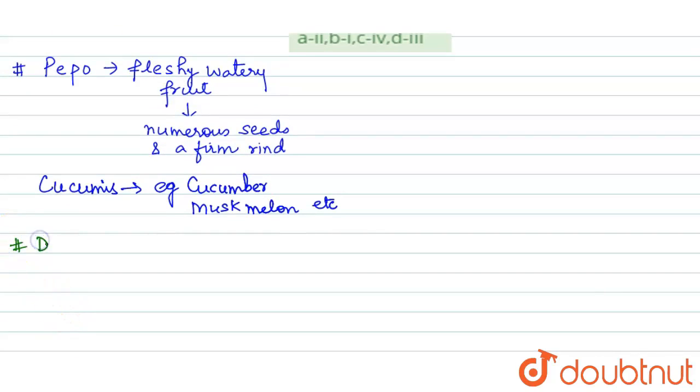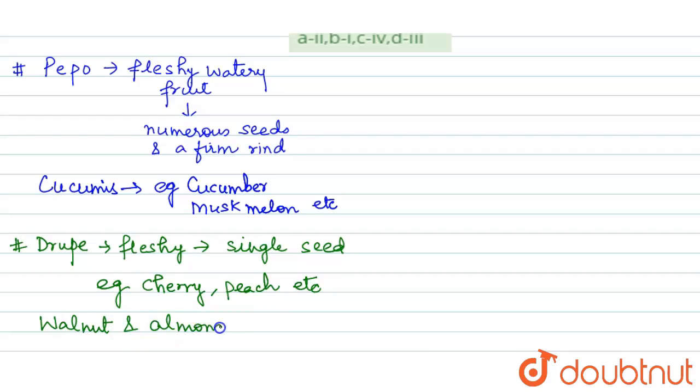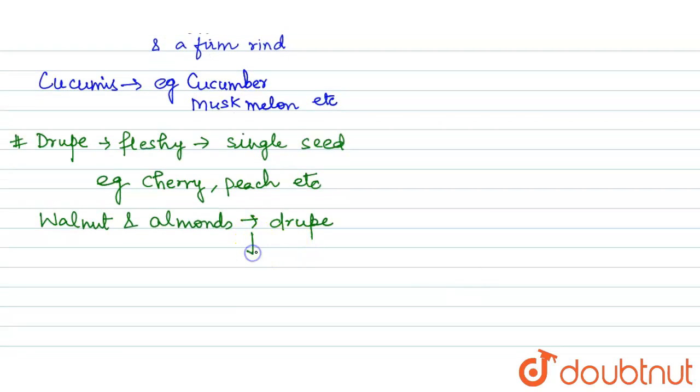For example, cherry, peach, etc. But there is an exception that walnut and almonds also known as drupe because they belong to genus Juglans.